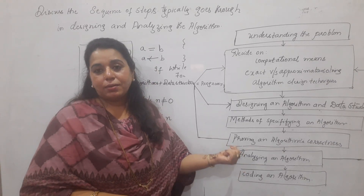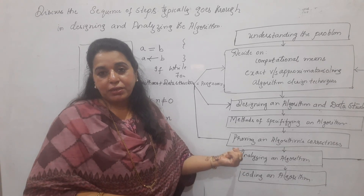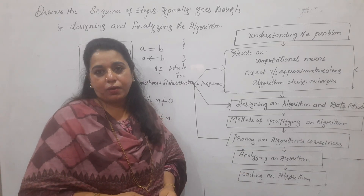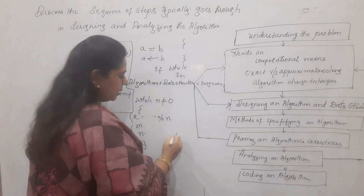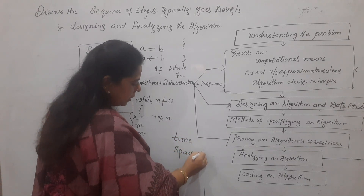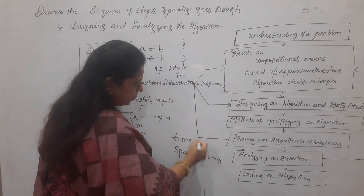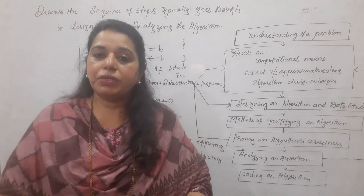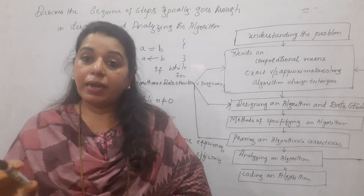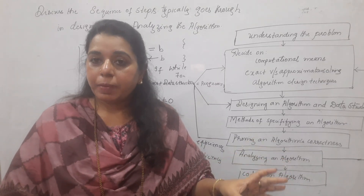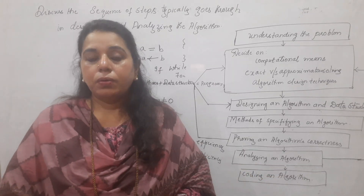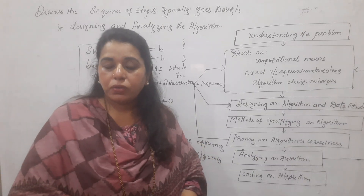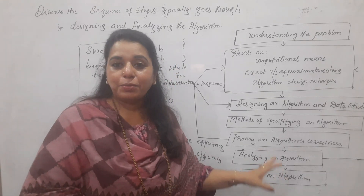Analyzing an algorithm is the most important step and is the major study of this subject. Analyzing means checking the performance of an algorithm using time efficiency and space efficiency — also called time complexity and space complexity. Time efficiency indicates the running time of an algorithm, while space efficiency indicates how much extra memory it requires.